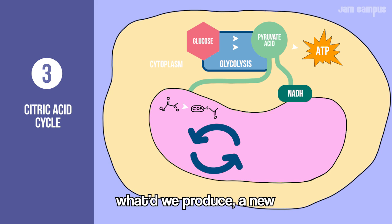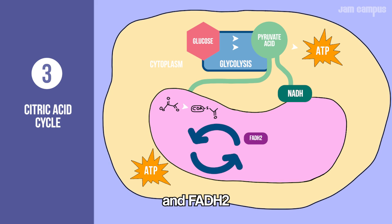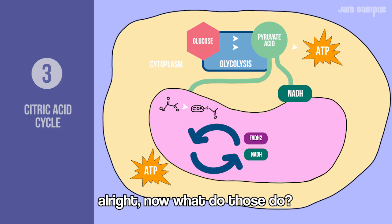The citric acid cycle causes a release of CO2 while producing new ATP, FADH2, and NADH.